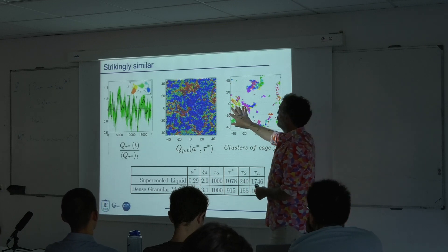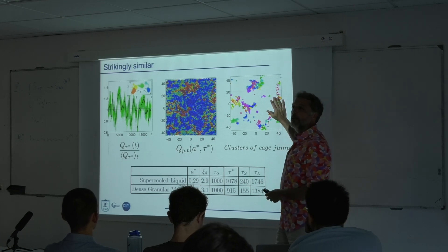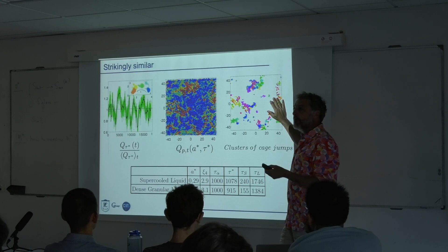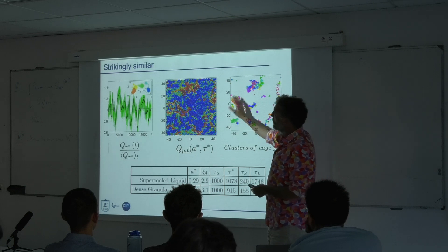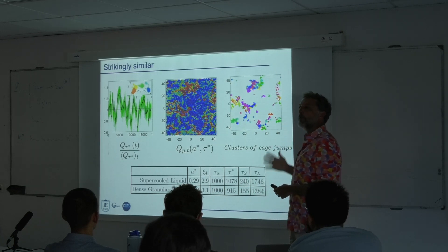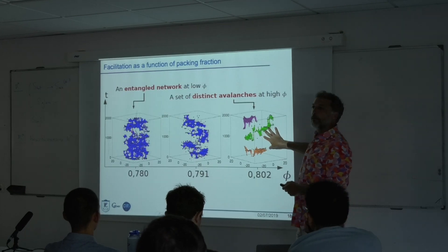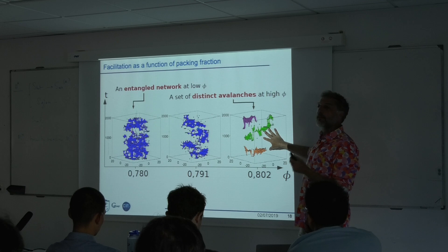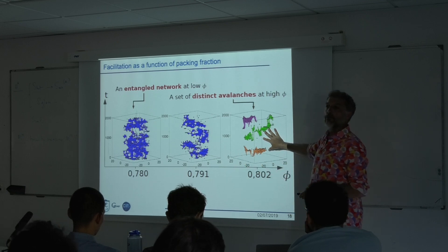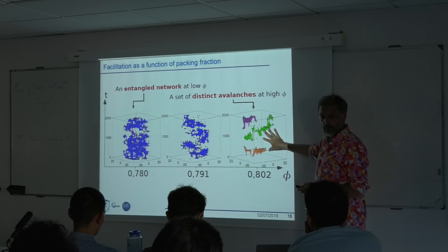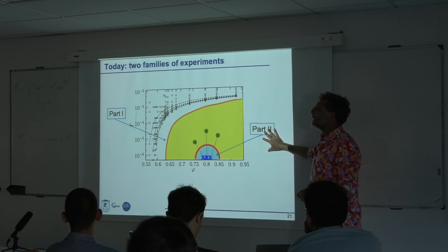We collaborated with Peter Harrowell and looked at the same thing in simulated liquids, reproducing exactly the same analysis. The fluctuating dynamical structure factor, the cage jumps, the dynamical heterogeneities, and the avalanches of cooperative clusters all appear the same way. The numbers also match: mapping tau-alpha of the granular system and the supercooled liquid, the tau-star, length scale r-star, and the long and short time scales between cooperative clusters are all of the same order. Although it is grains, it is a good model to study this complicated dynamics.